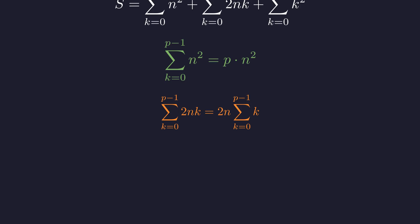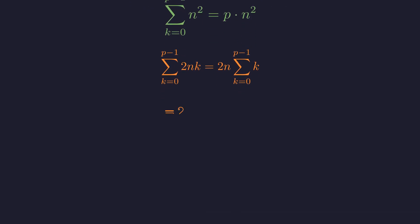For the second sum, we can factor out the constant term 2n, leaving us with a sum of consecutive integers.